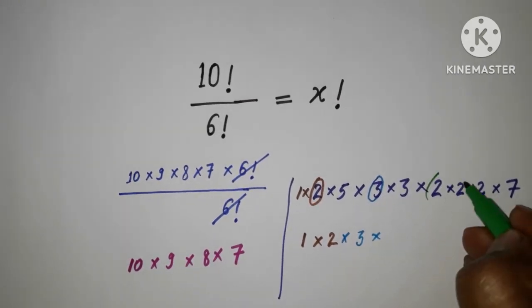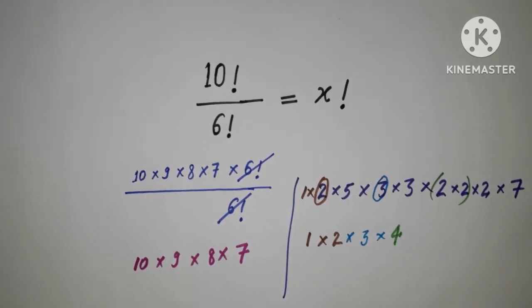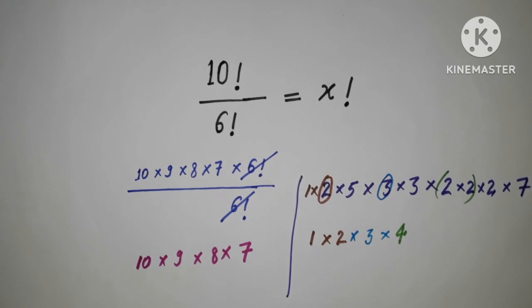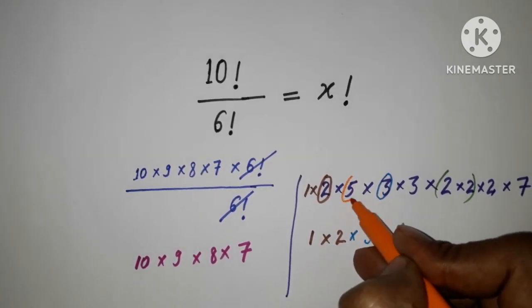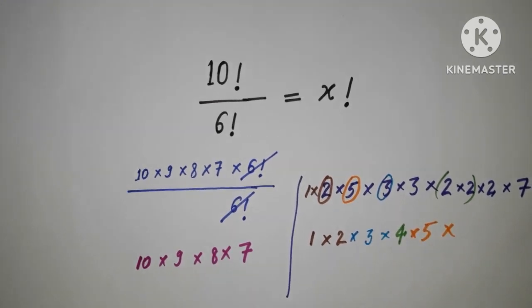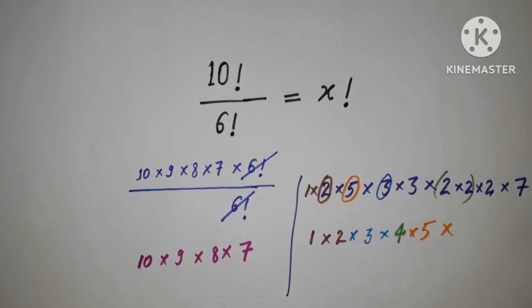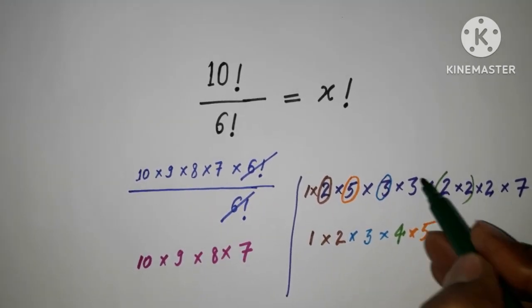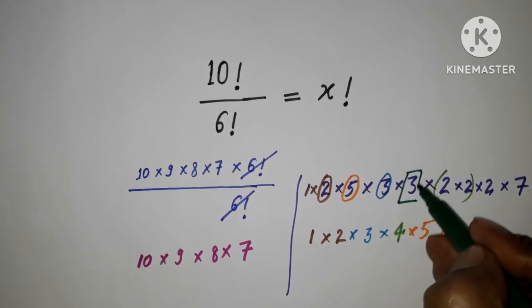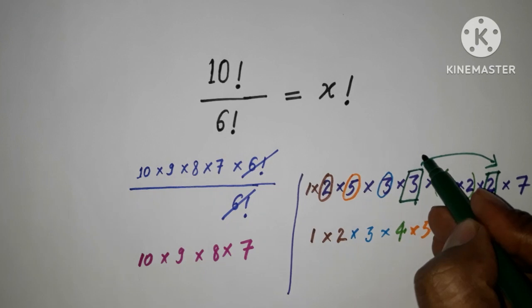And then I need to get 5, so I am getting 5 from here, this 5, into 5. And then I need to get 6, so I will find where is 6. So here 3 and this remaining 2, this 2 will give us 6. 3 and 2, 3 into 2, this will give us 6.